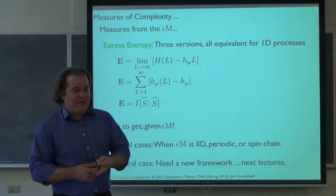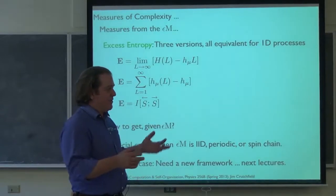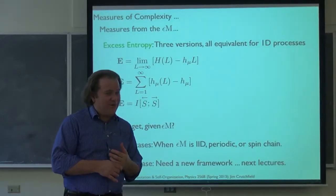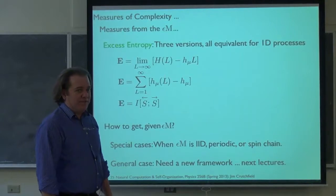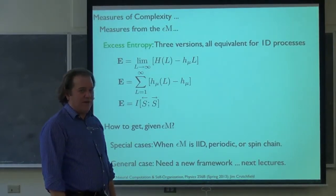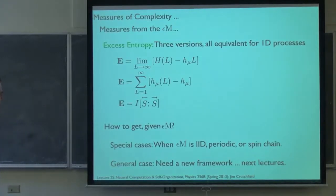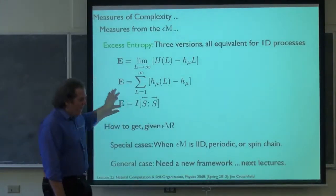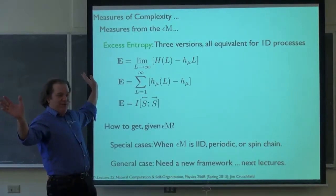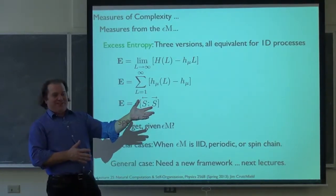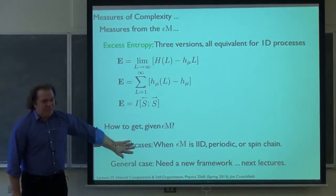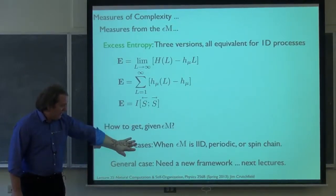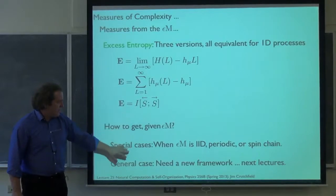We'd like to think that if the epsilon machine is this minimal sufficient statistic and you can calculate anything from it for a process, we should be able to get this excess entropy from it. That's a remarkably subtle question — it took almost 15 years to figure out. But I'll give you the answer in less than 15 years. How do I get this excess entropy — past-future mutual information — from the epsilon machine? It generates the process, so there's got to be some connection. There are some particular cases, and we'll compare the excess entropy to the statistical complexity.